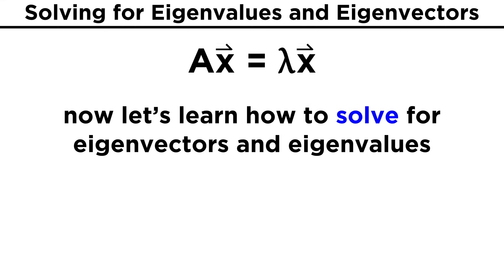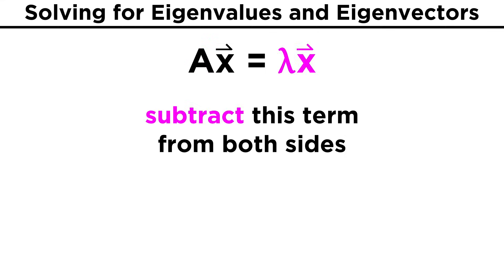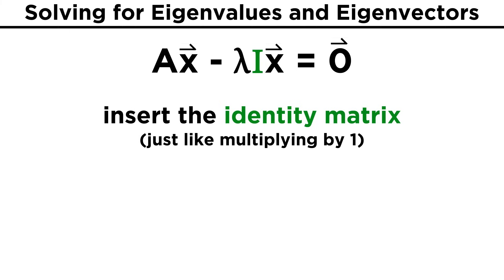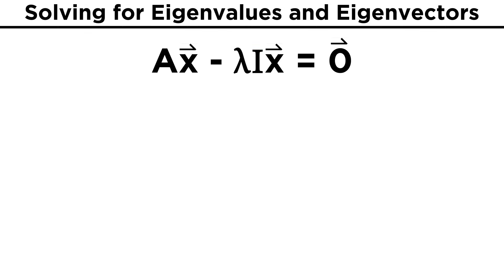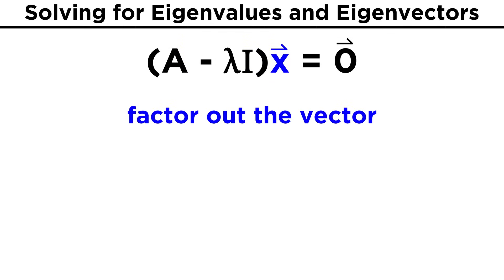Now that we are better acquainted with eigenvalues and eigenvectors, let's start learning how to solve for them. We know that the eigenvalues and eigenvectors of a square matrix A obey the equation AX equals lambda X. In order to solve this, we will first subtract lambda X from both sides. Then in between lambda and X, we will insert the identity matrix I, which is the matrix equivalent of multiplying by one, so we are not changing the equation. Now we have AX minus lambda IX equals the zero vector. If we factor out the vector, we can rewrite this as the quantity A minus lambda I times X equals the zero vector.